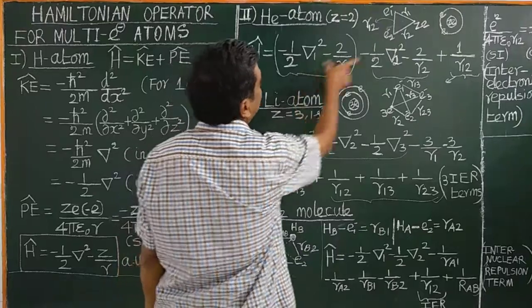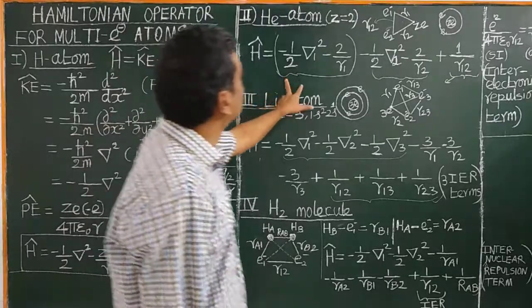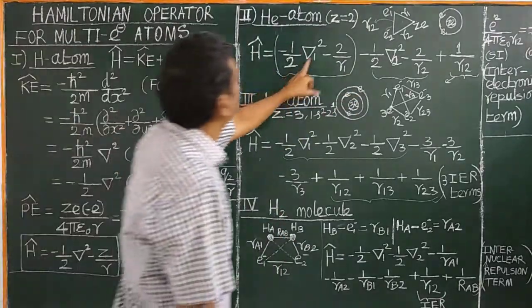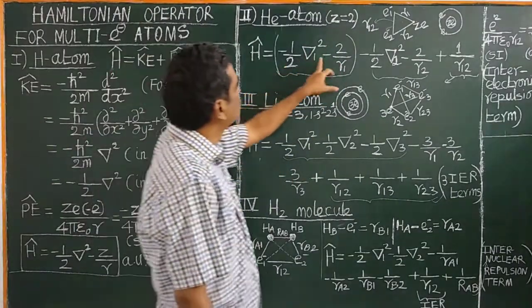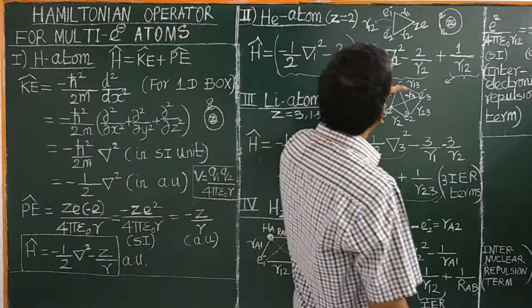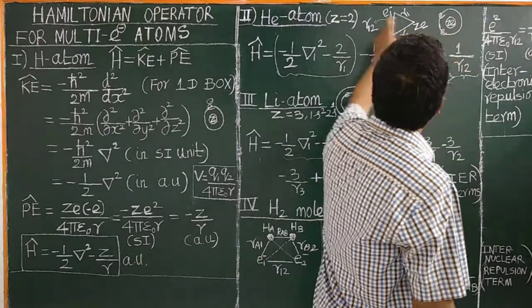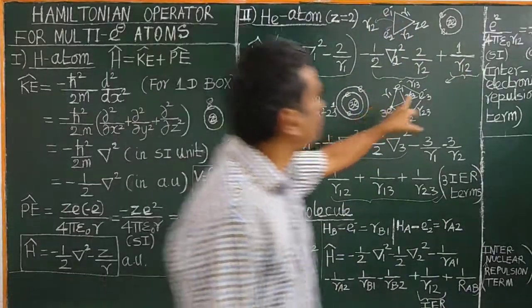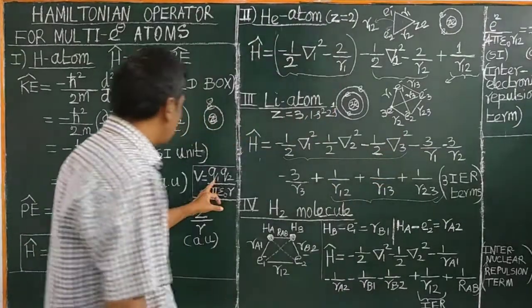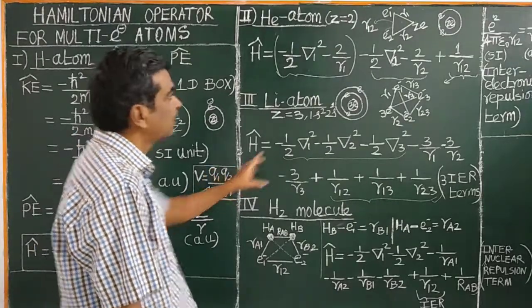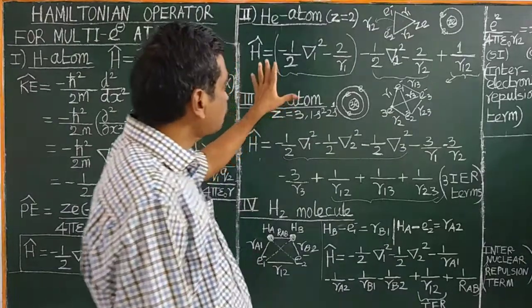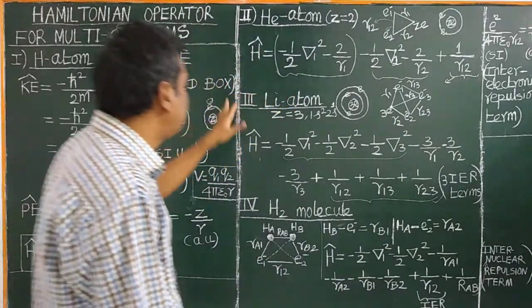The electronic Hamiltonian for helium has two parts per electron. For electron 1: kinetic energy term minus one-half del-1-squared, and potential energy term minus 2 by R1. For electron 2: minus one-half del-2-squared, minus 2 by R2. Plus the extra term, which is the inter-electronic repulsion term: 1 by R12 in atomic units. This is the simplified Hamiltonian operator for helium atom.